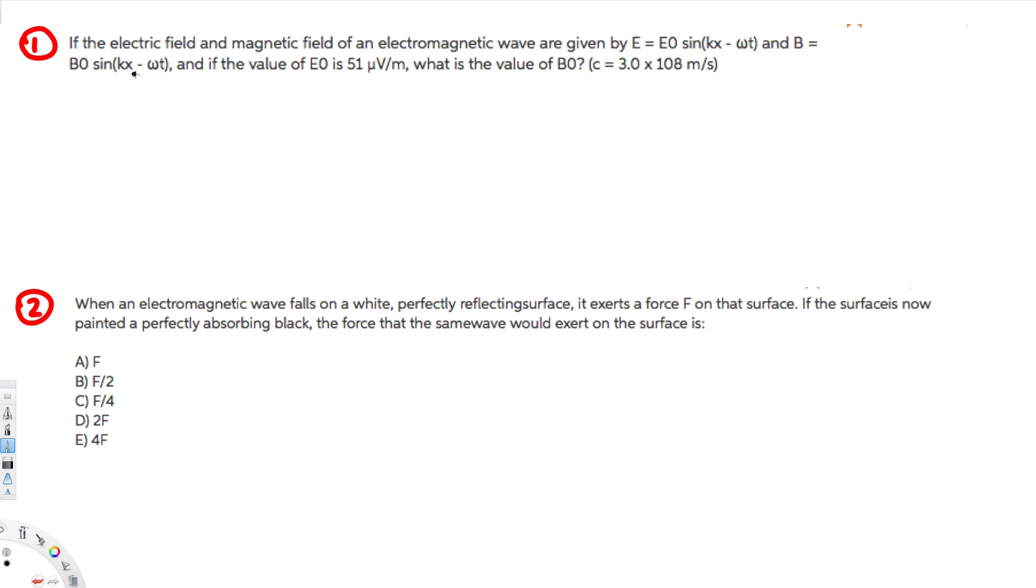And B equals B naught sine kx minus omega t, and if the value of E naught is 51 microvolts per meter, what is the value of B naught? So here you notice amplitude of electric field and B naught is amplitude of magnetic field.